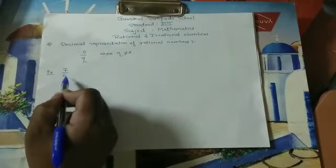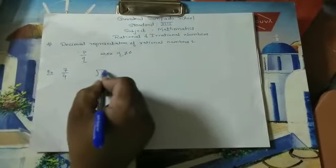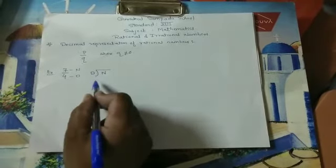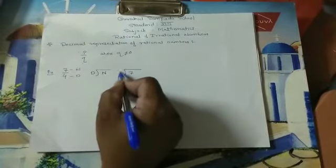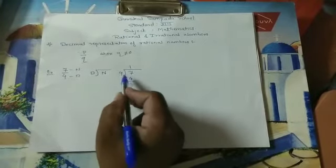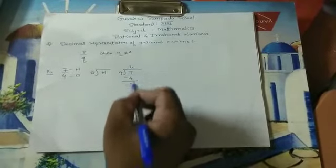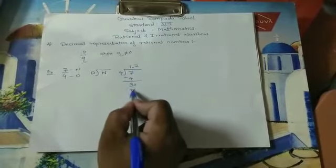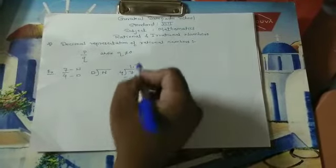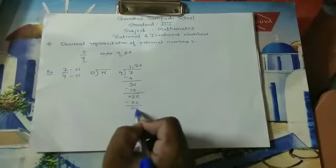Now consider the example 7 by 4. What is the decimal representation? When we divide, the numerator is 7 and the denominator is 4. So 7 divided by 4: 4 ones are 4, so 7 minus 4 is 3. Now 4 is not divisible by 3, so we take a decimal point and bring down a 0. Now 4 sevens are 28, so the difference becomes 2. We bring down another 0; 4 fives are 20, so the difference becomes 0.